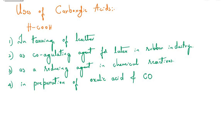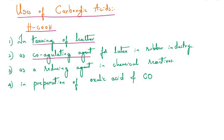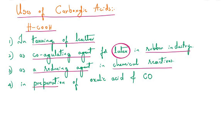Now for the uses of carboxylic acids. Formic acid is used in the tanning of leather in the leather industry, as a coagulating agent for latex in the rubber industry, as a reducing agent in chemical reactions, and in the preparation of oxalic acid and carbon monoxide.